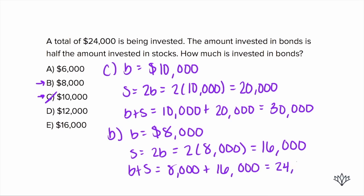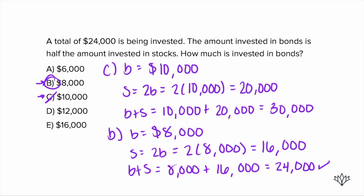Now, I'm going to show you how to set this up algebraically as well, because it's an important skill for other problems. So here's the deal. We have bonds and then we know the amount invested in bonds is half the amount invested in stocks. So we're going to say the amount invested in bonds is half the amount invested in stocks. So again, this is equal to $24,000. So let's write equals $24,000.